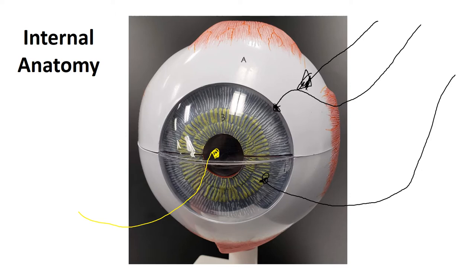A common question is how to distinguish the conjunctiva versus the sclera. When I'm looking at the model and pointing to the white, you should think sclera. But if I were to ask about the conjunctiva on the model, I would ask what mucous membrane covers this structure. If I asked where the conjunctiva is, I'd more likely ask that using an actual picture from a previous slide rather than the model, but if I did ask on the model, I'd ask about the mucous membrane that covers the sclera.